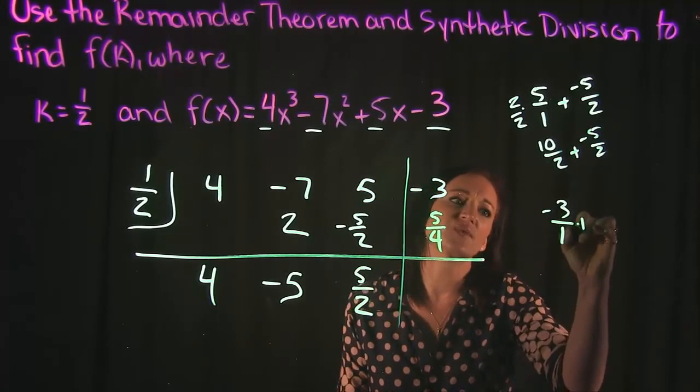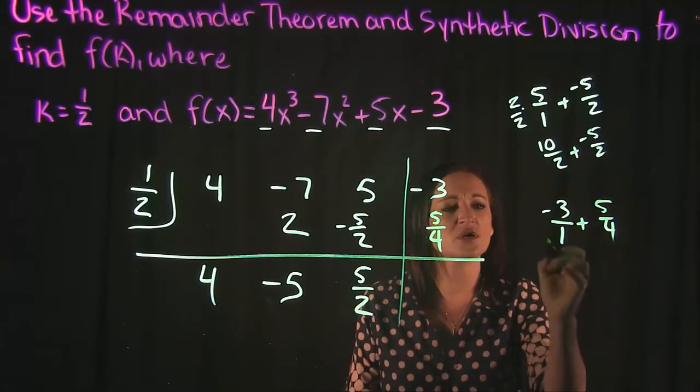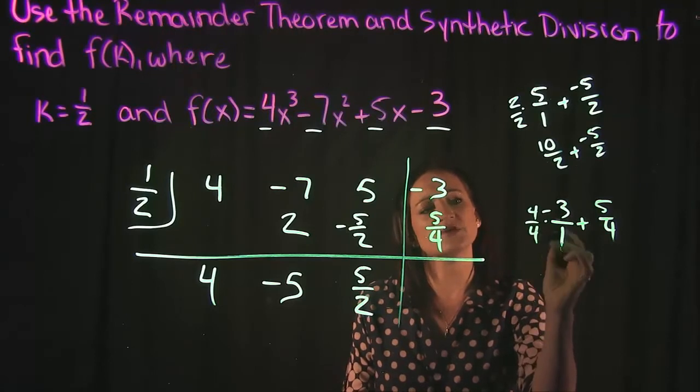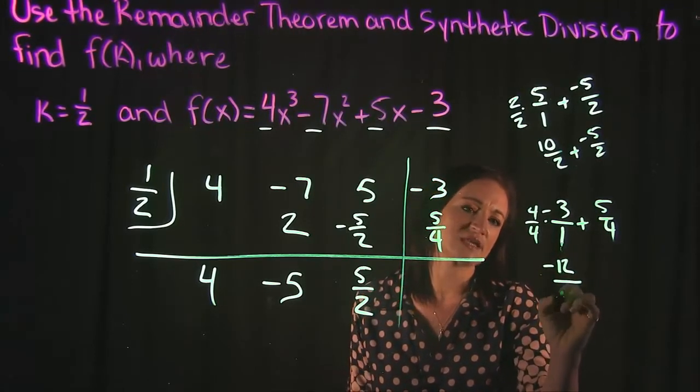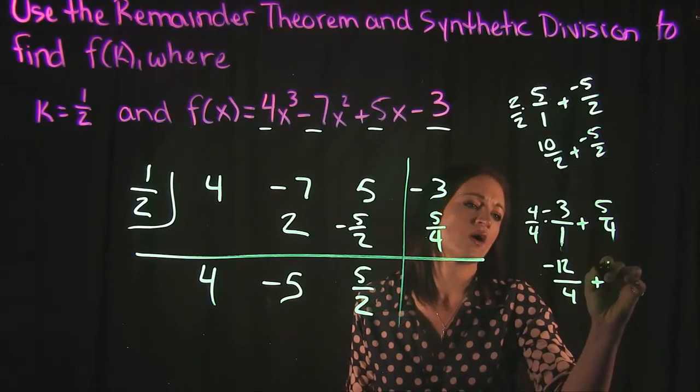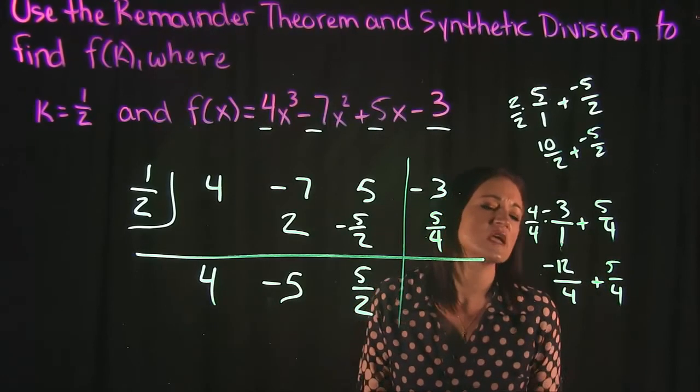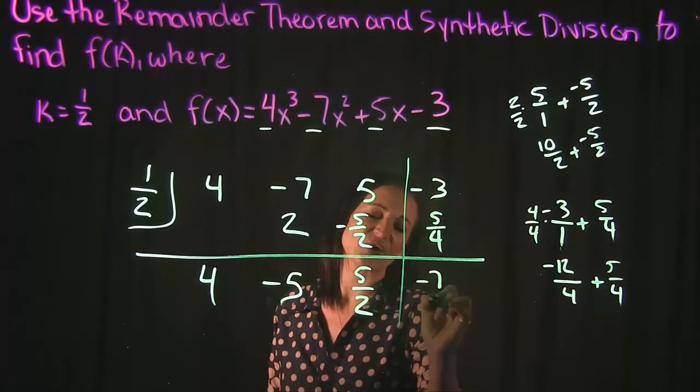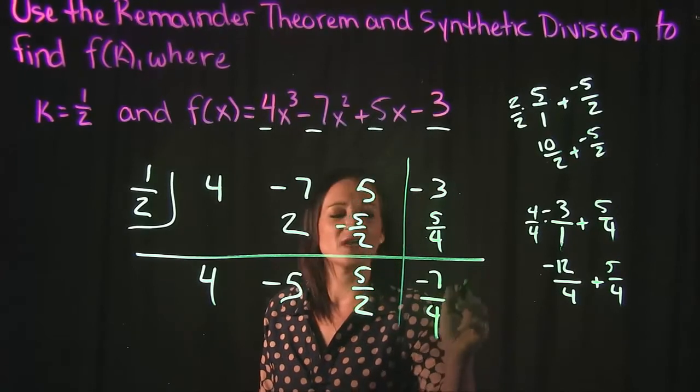So we need to do a negative 3 plus 5 fourths. Common denominators would be a 4. So that gives us a negative 12 over 4 plus 5 fourths. And when we add this together we get negative 7 fourths.